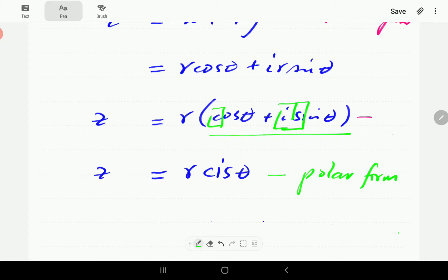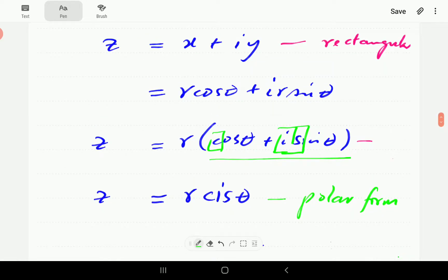So we have the rectangular form, we have the polar form. In the next two videos, we're going to see how to move between these two forms. So you need to be able given a number in rectangular form, to express it in polar form. And given a complex number in polar form, you need to be able to express it in rectangular form.